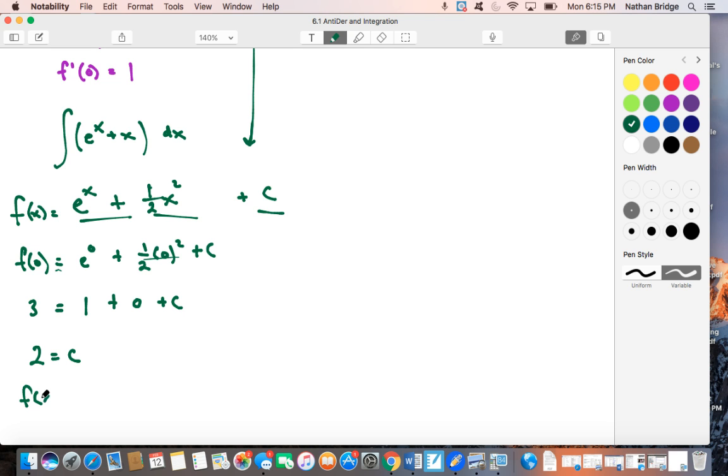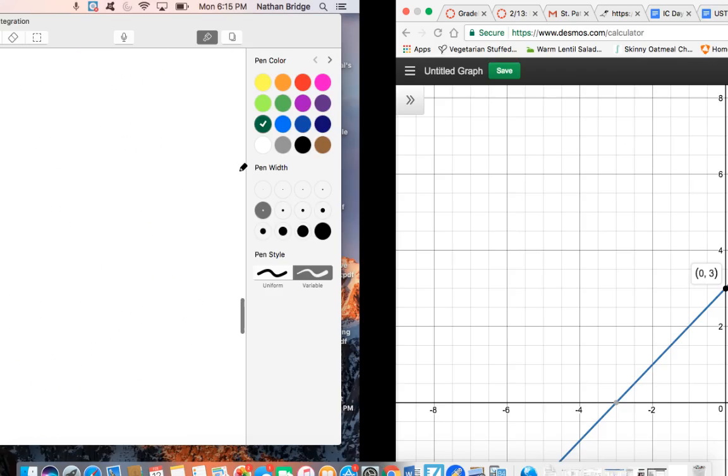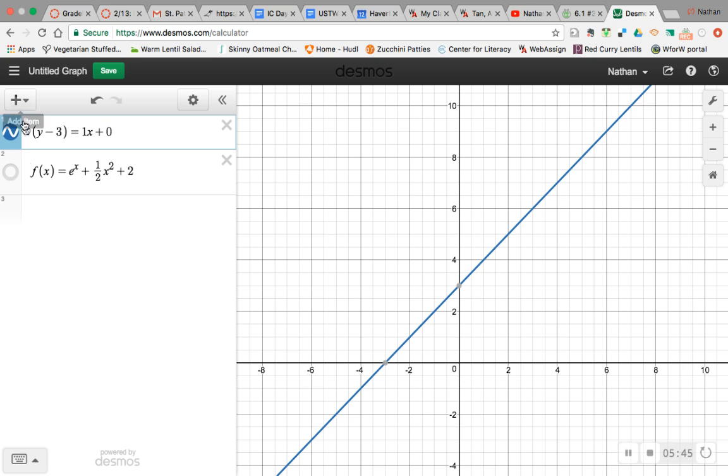So f of x is equal to e to the x plus 1 half x squared plus 2. And now we can go and test this. So we can go ahead and plug this into Desmos and see, hey, for this function, whatever this crazy function looks like, does our tangent line touch it at this point in tangency? Only once. Switching over, turning this on.